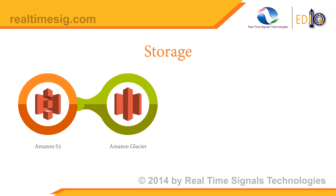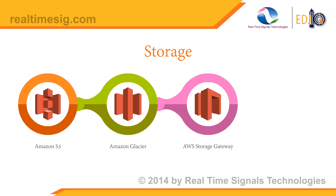Glacier: data is stored in Amazon Glacier in archives. An archive can be comprised of any data such as photos, videos, or documents. You can upload a single file as an archive or aggregate multiple files. AWS Storage Gateway is a hybrid storage service that enables on-premises applications to seamlessly use AWS cloud storage. Applications connect through a virtual machine or hardware gateway appliance using standard storage protocols such as NFS, SMB, and iSCSI.